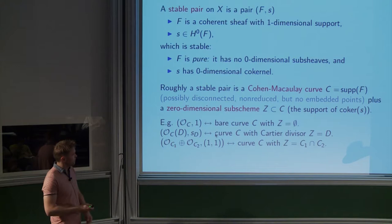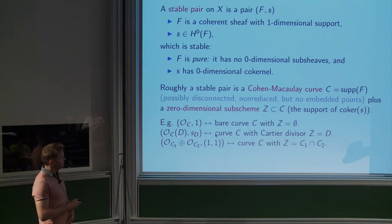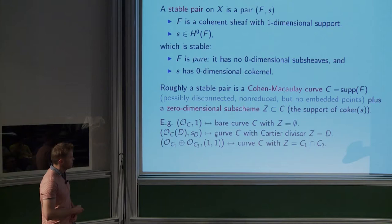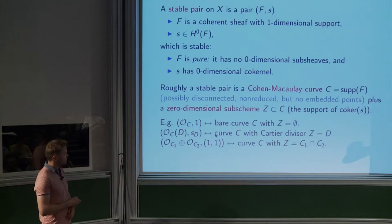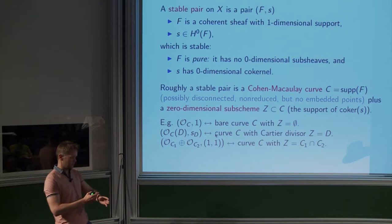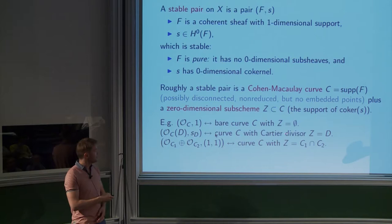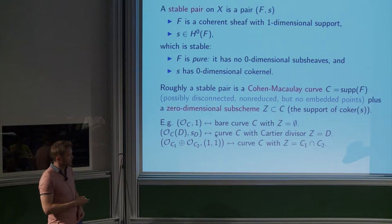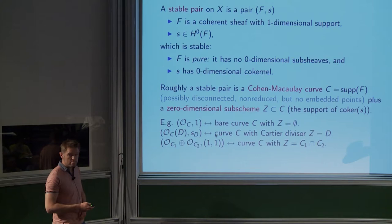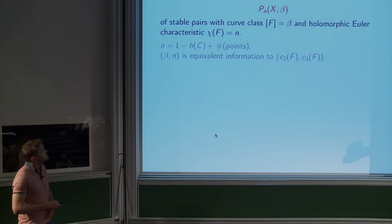For instance: from a curve in a variety you get a stable pair by taking the structure sheaf of the curve — that's the torsion sheaf supported in dimension one — with section one. Or you might have a curve with a Cartier divisor on it, giving a line bundle on the curve with section vanishing on the divisor. A simple example: take the structure sheaf of two curves intersecting at a point with the obvious section; you get cokernel wherever the curves intersect — a point at the intersection.